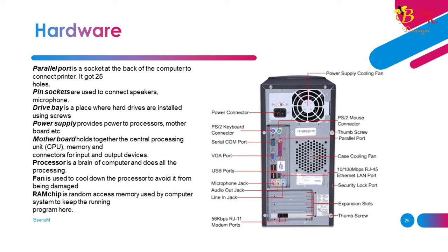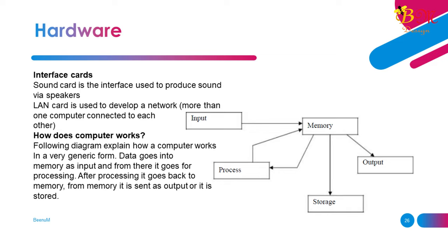Motherboard holds together the central processing unit (CPU), memory, and connectors for input and output devices. The processor is the brain of the computer and does all the processing. A fan is used to cool down the processor to avoid damage. RAM (random access memory) is used by the computer system to keep running programs. Interface cards: the sound card is the interface used to produce sound via speakers. The LAN card is used to develop a network connecting more than one computer.